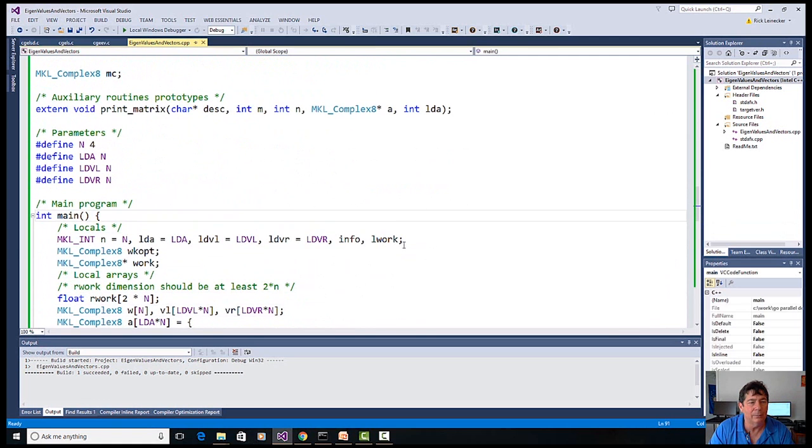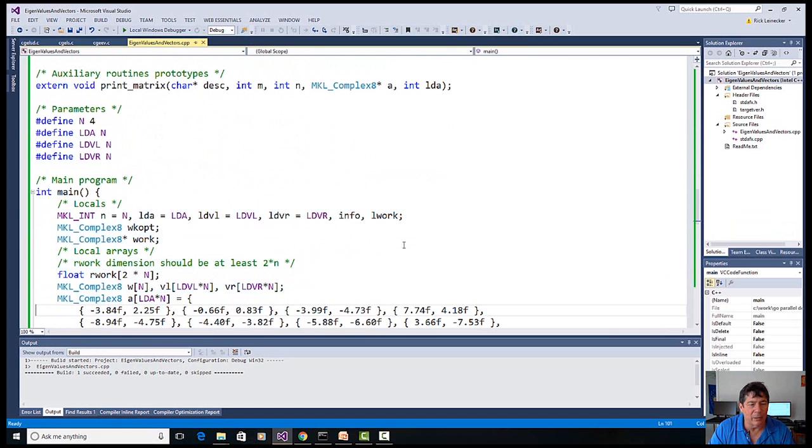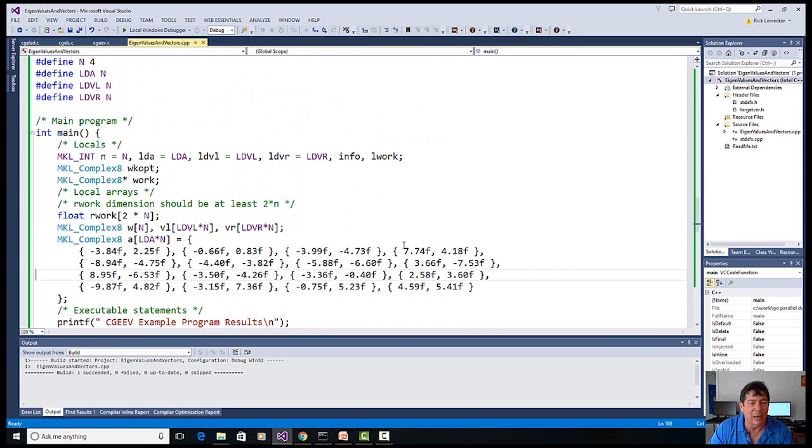So, we come through here. We do a little bit of setup. This is just variables and objects we're going to use. And here, we've got a complex array with A. Those are the values we're going to feed.